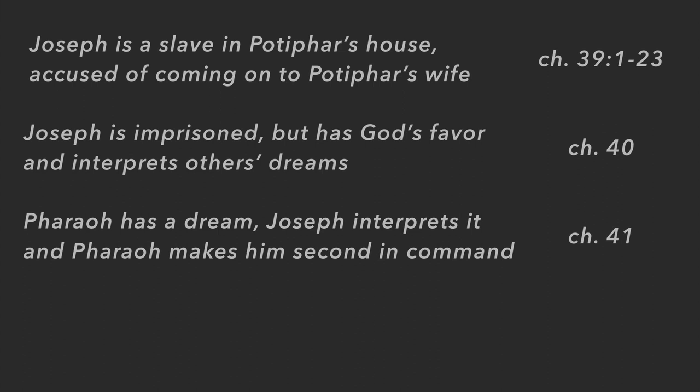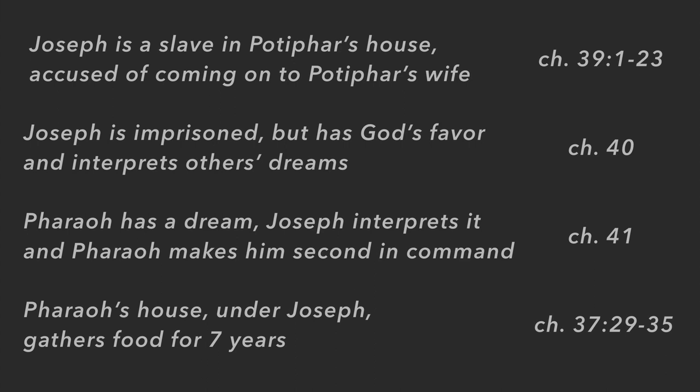Pharaoh has a dream and the people in his court can't interpret it. They remember there was a man in prison who could interpret dreams. They bring Joseph before Pharaoh. He interprets the dream, and in almost one day, Joseph goes from being forgotten in prison to the second most powerful person in the world — second in command to Pharaoh. We see this in chapter 41. This is the sovereignty of God.